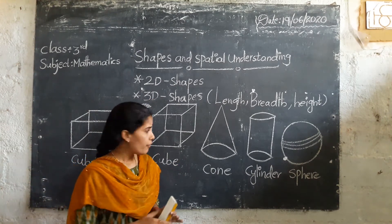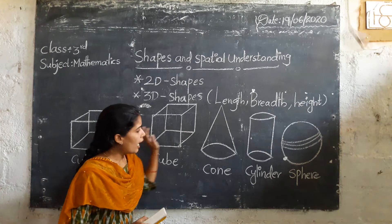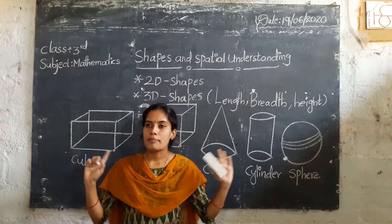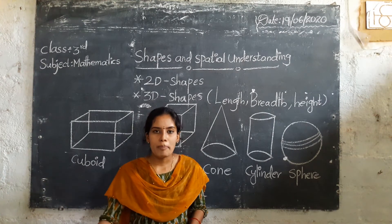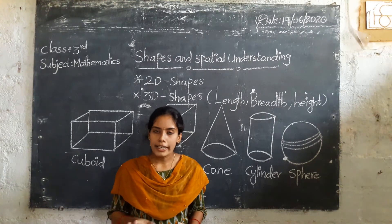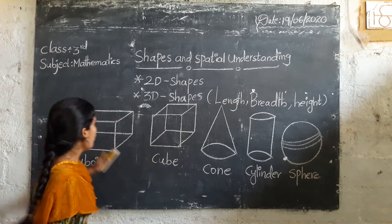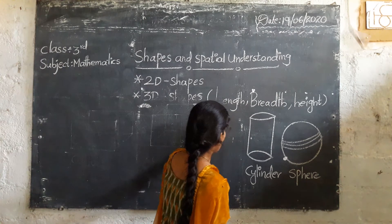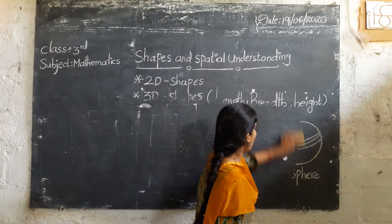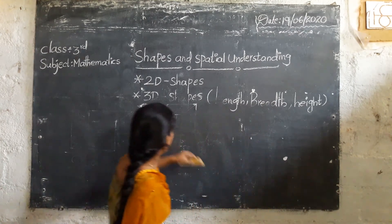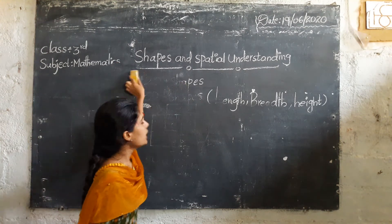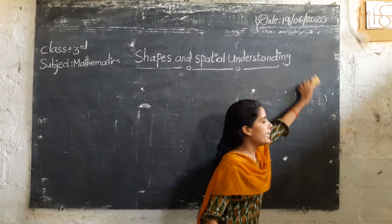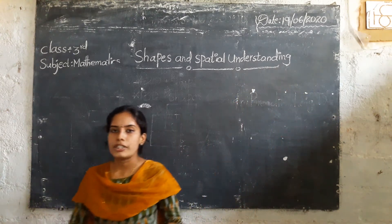Children, first you will understand these 3D shapes, and then you will observe in your surroundings which shape items are. Shapes may be divided into 2D shapes and 3D shapes. 2D shapes have 2 measurements and 3D shapes have 3 measurements.